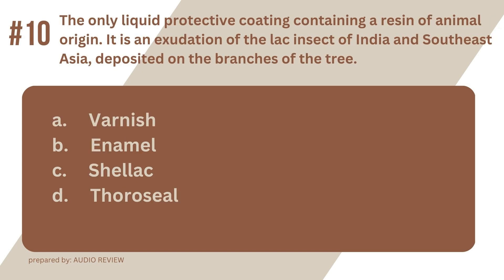Question 10. The only liquid protective coating containing a resin of animal origin. It is an exudation of the lac insect of India and Southeast Asia, deposited on the branches of the tree. A. Varnish. B. Enamel. C. Shellac. D. Thoracil. The answer? It's C. Shellac. The only liquid protective coating containing a resin of animal origin. It is an exudation of the lac insect of India and Southeast Asia, deposited on the branches of the tree. Shellac.